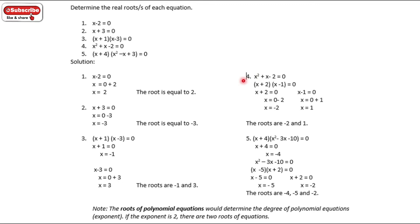For number 4, x squared plus 2x, which is x squared plus x minus 2. Using the factoring method, that is x plus 2 times x minus 1 — recall from your Grade 9 topics. So x plus 2 equals 0 and x minus 1 equals 0, giving x equals negative 2 and x equals 1. So the roots are negative 2 and positive 1.